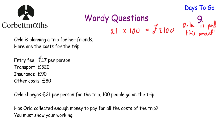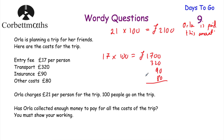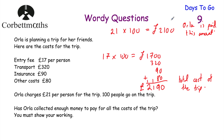Now let's work out how much the trip costs. The entry fee is £17 per person and there are 100 people, so £17 × 100 = £1,700. Then we add the other costs: transport £320, insurance £90, and other costs £80. Adding 1,700 + 320 + 90 + 80 gives a total cost of £2,190. So the total cost is £2,190, and the money she receives is £2,100.